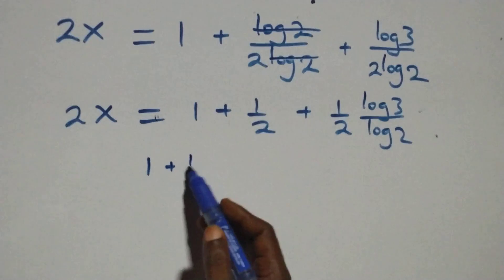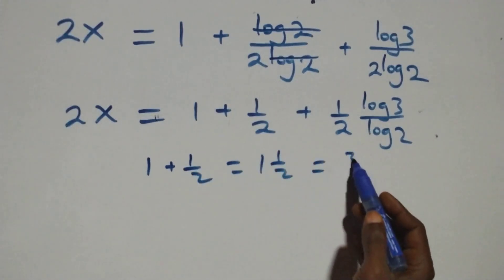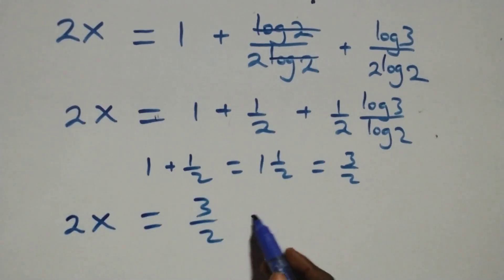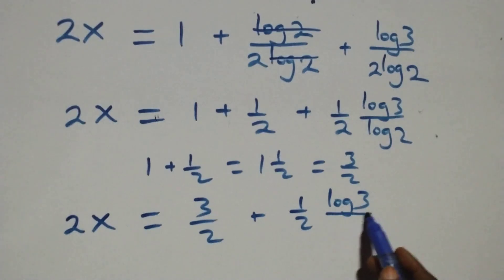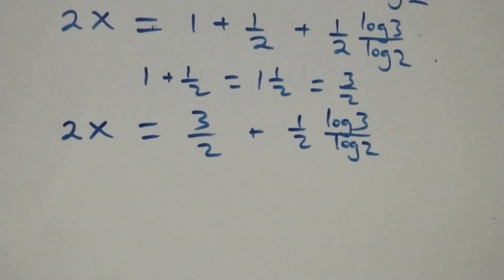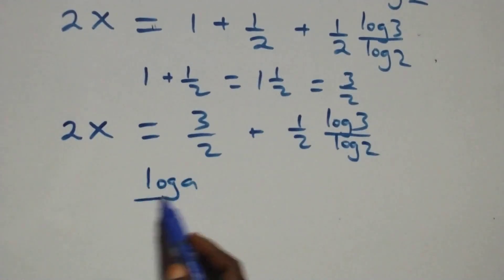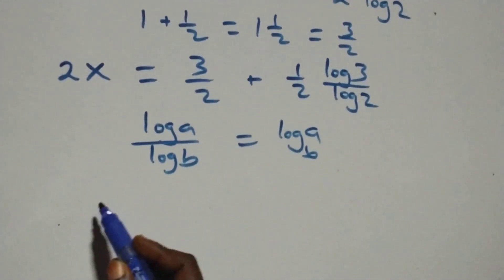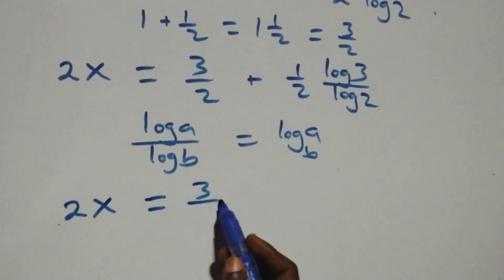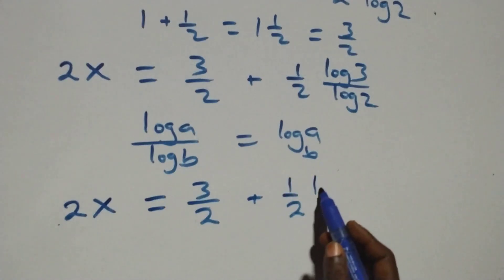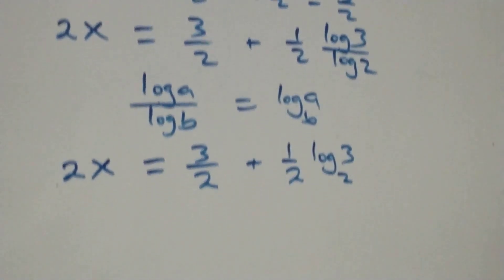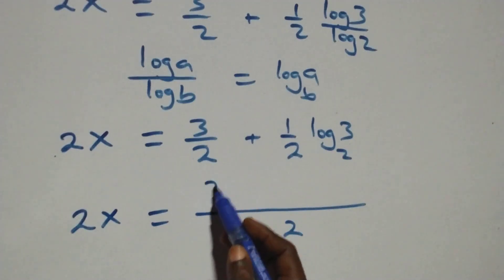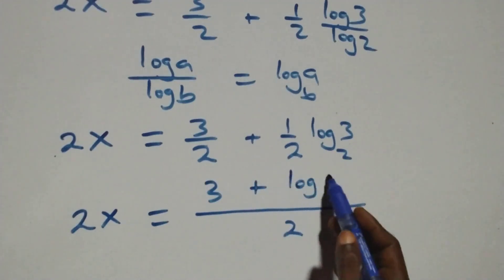Then 1 plus 1 over 2 can be written as 3 over 2. So we have 2x equals 3 over 2 plus (1 over 2) log₂3. Bringing this together as a single fraction over 2, we have 2x equals (3 plus log₂3) over 2.